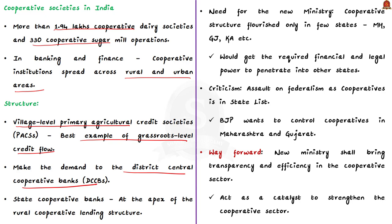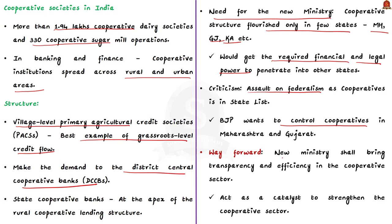The cooperative structure flourished only in a handful of states like Maharashtra, Gujarat, and Karnataka. With a new ministry, the cooperative movement would get the required financial and legal power to penetrate into other states. However, there are criticisms that the creation of the new ministry is an assault on federalism, and that the real aim of the party in power is to control cooperatives in Maharashtra and Gujarat — for example, NCP and Congress leaders are said to control most cooperatives including sugar mills in Maharashtra. To conclude, the formation of a separate ministry for cooperatives shall bring transparency and efficiency, acting as a catalyst to strengthen the sector rather than a command authority controlling it.